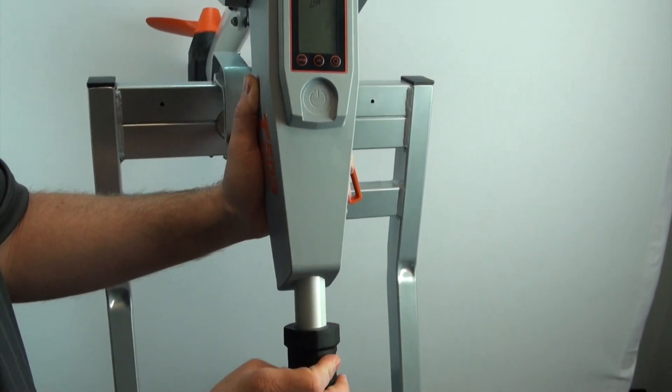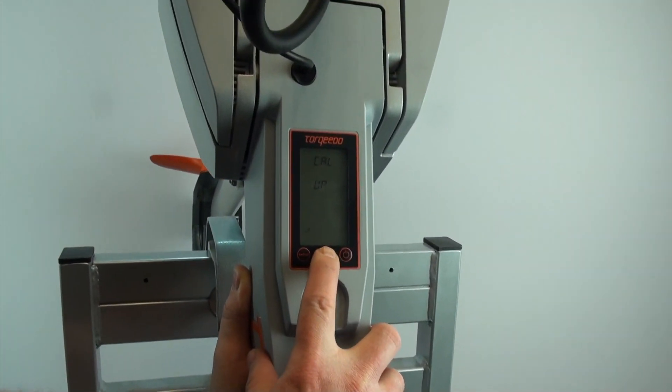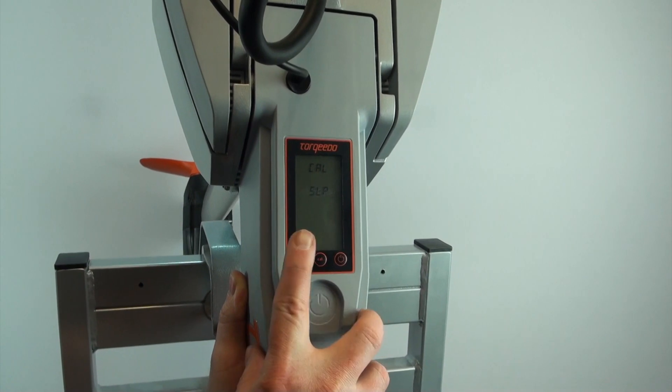Go ahead and rotate the tiller handle in the forward position. Press and release the CAL button to confirm. CAL STP.